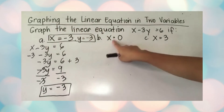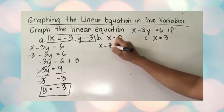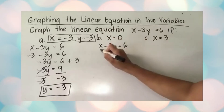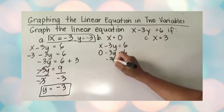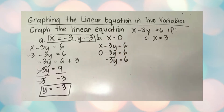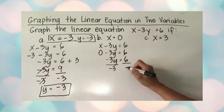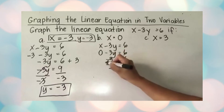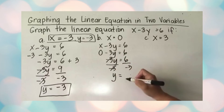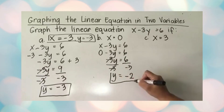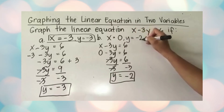Now substitute zero for x: 0 minus 3y equals 6, so negative 3y equals 6. Divide both sides by negative three — this cancels out — and you get y equals 6 divided by negative three, which is negative two. So if x is zero, y is equal to negative two.